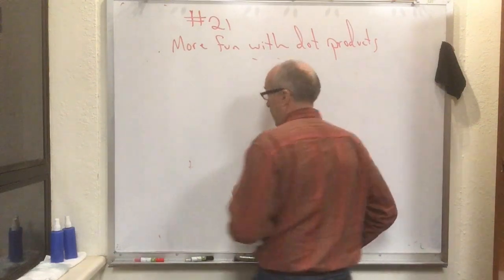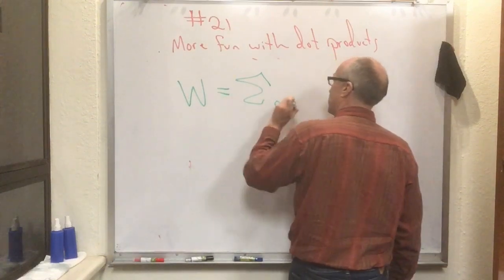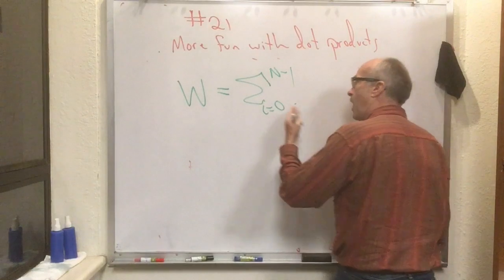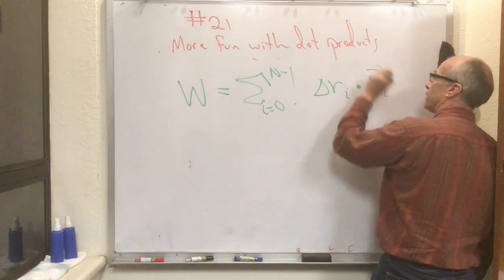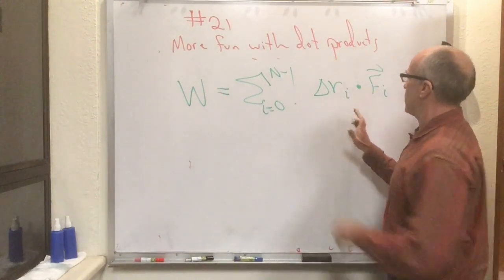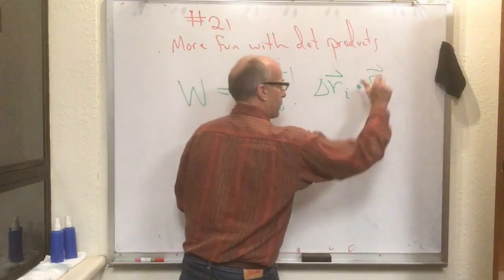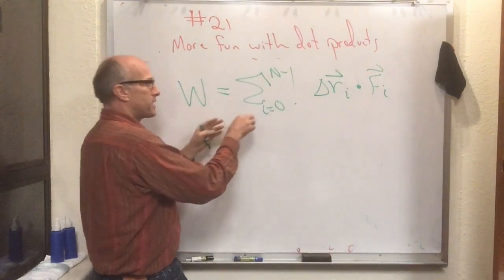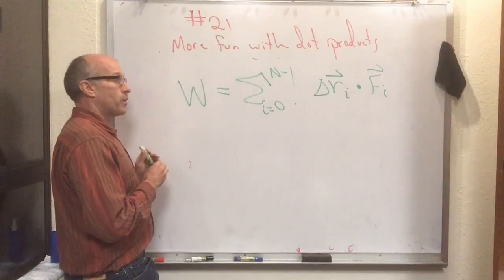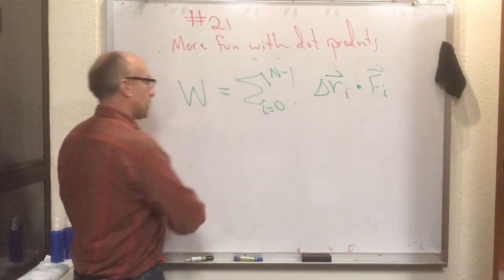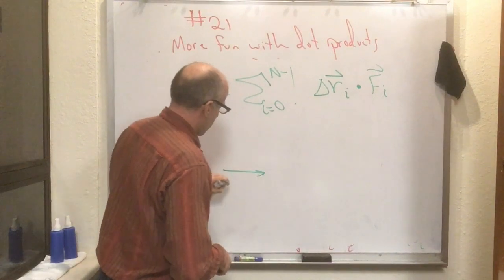Remember from the last flipped lecture, we showed that work done equals the sum from i equals zero to n minus one of delta-r sub i dot F sub i. If you don't remember that, go back to the previous flipped lecture. If the path is curvy or the force is varying, the work needs to be broken up into little bits and then summed to get the total work done by the force on the particle as it traverses the path.